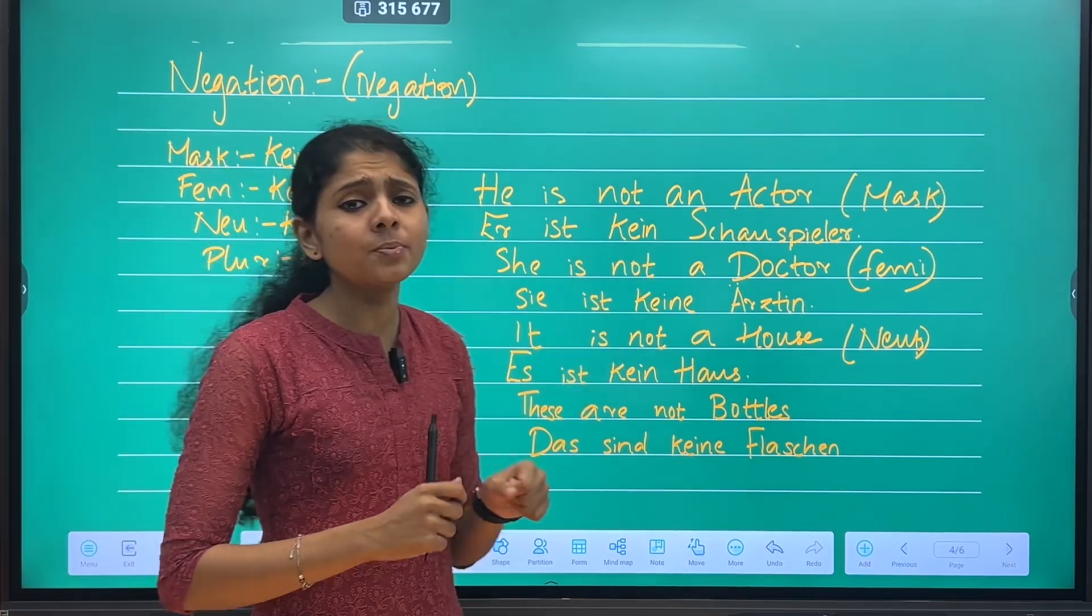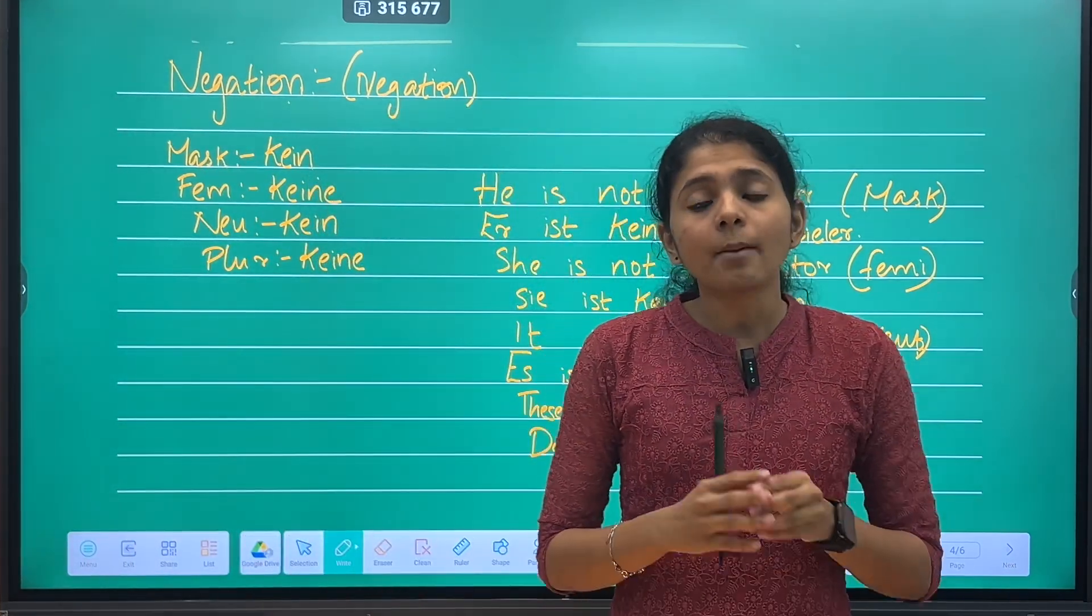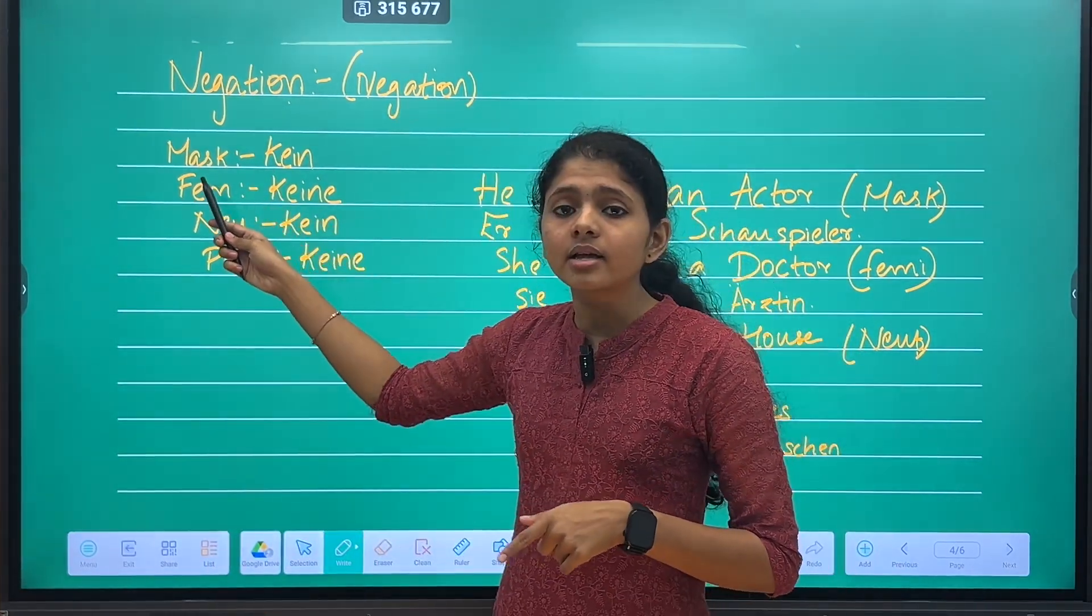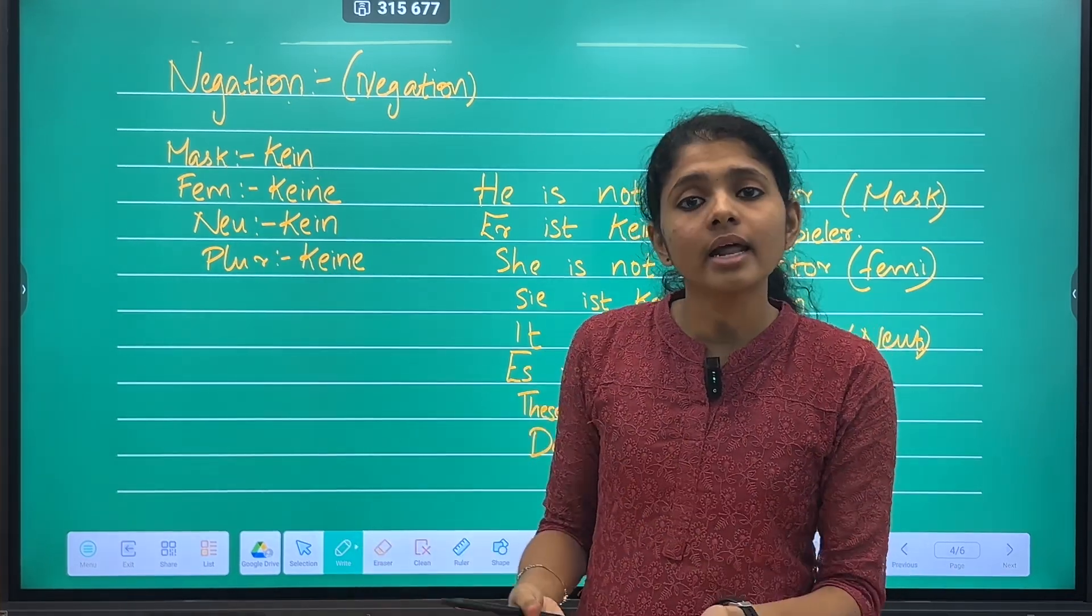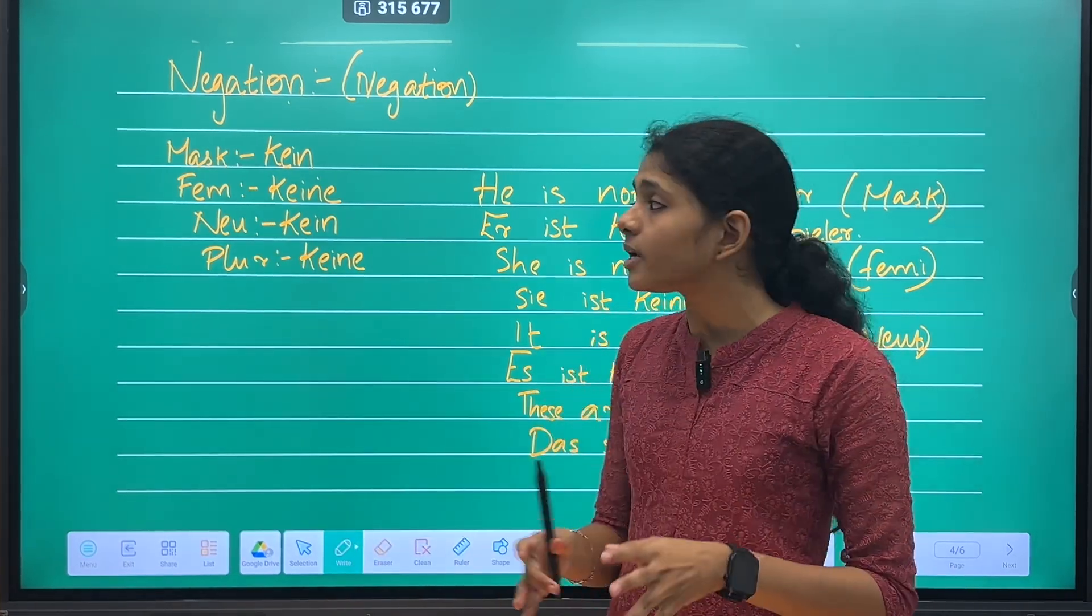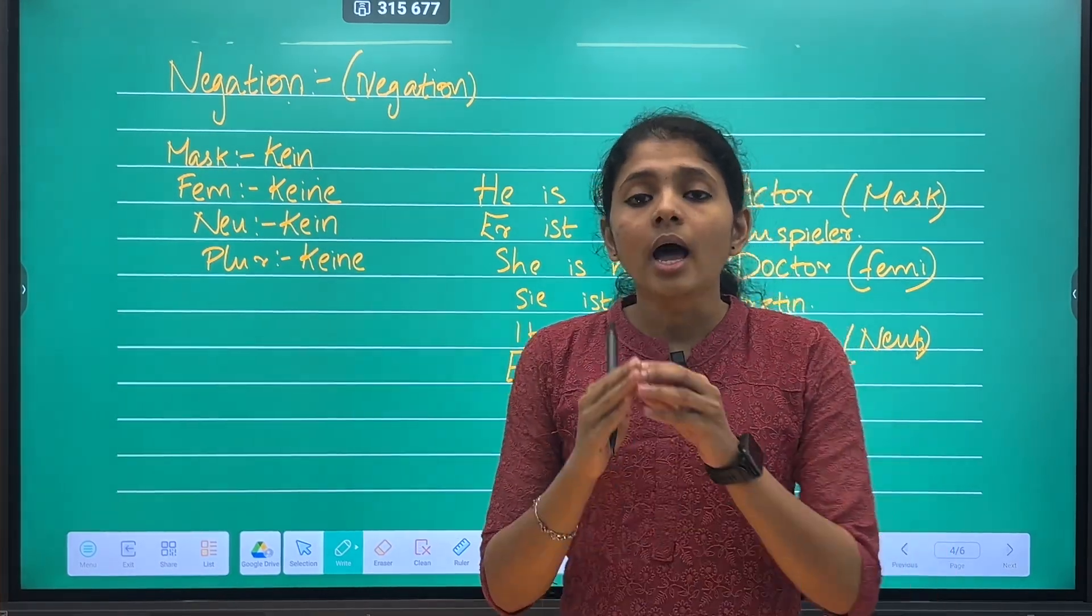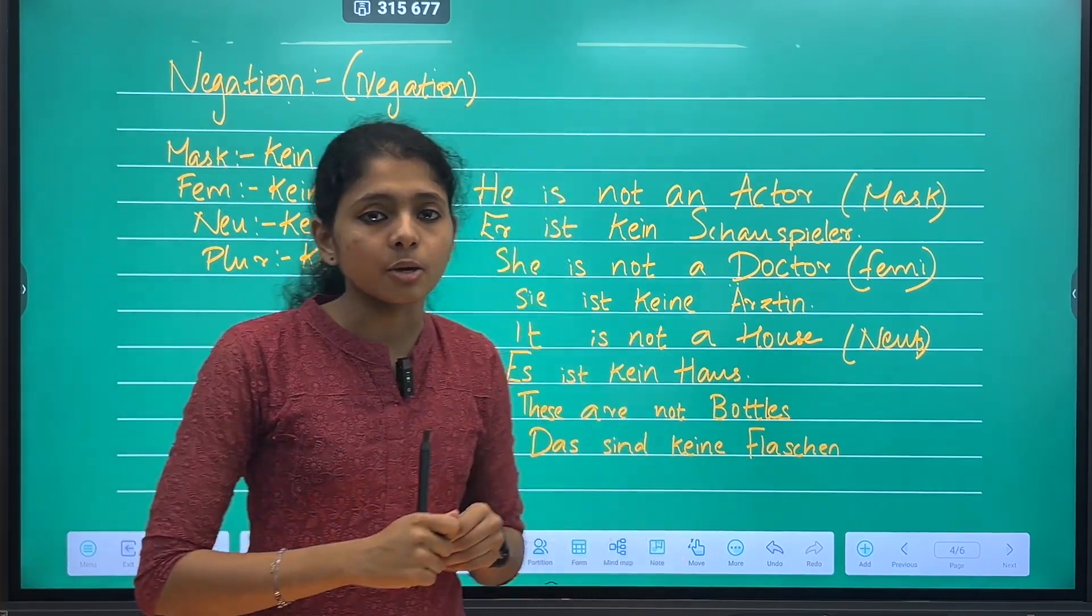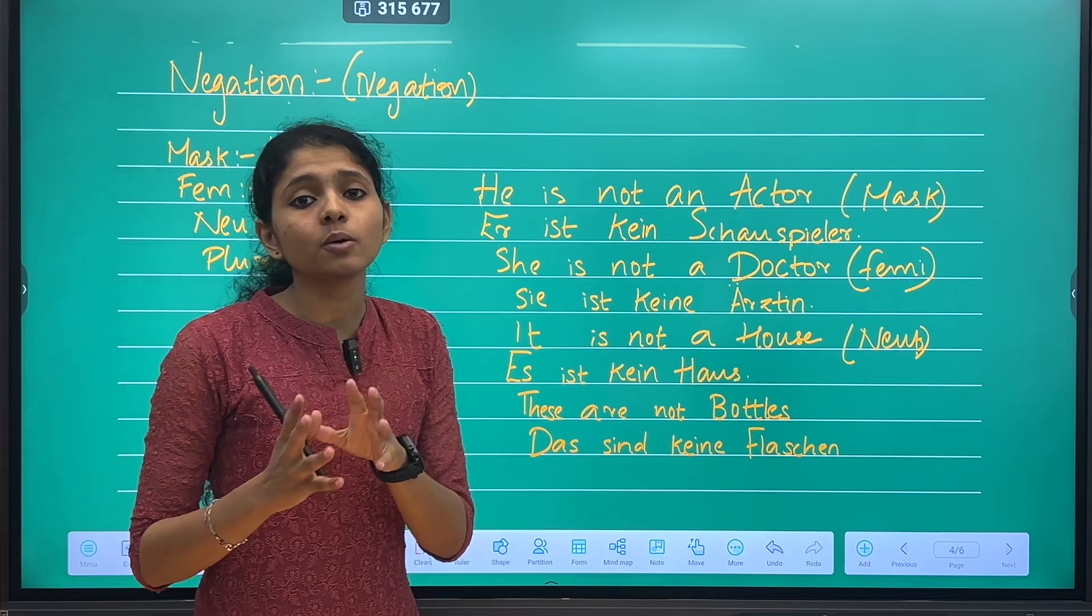Then how do we use this with the article ein? If the noun is masculine, then we use kein instead of ein. He is using this type of noun, so we use this type of negation.